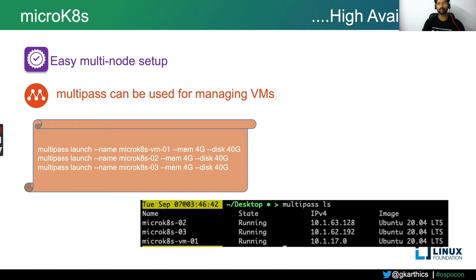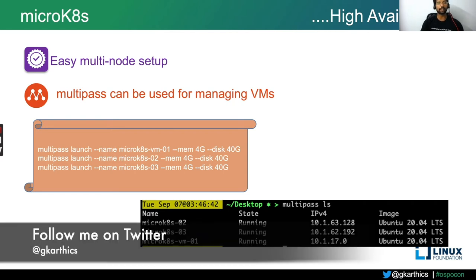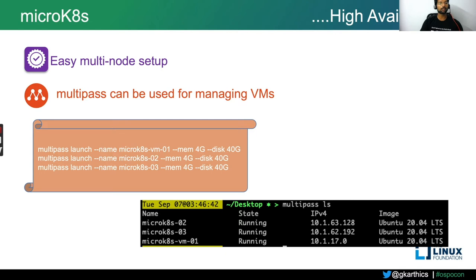Multipass uses Hyperkit as the local driver, or VirtualBox if it is available on your local machine. All you have to do is execute Multipass launch with the name of the virtual machine you want, then specify memory and disk storage space. I'm creating a couple of other machines as well — MicroK8s-02 and MicroK8s-03 — with the same memory and disk space. Once launched, executing Multipass list shows the machine name, state, IP address, and the image used for creating each virtual machine.